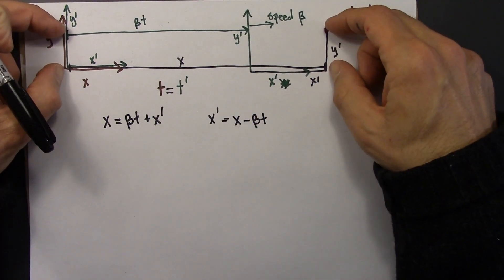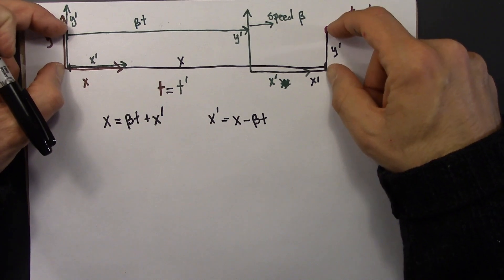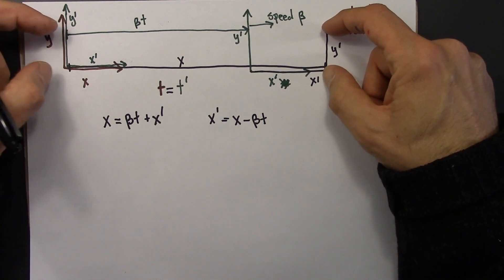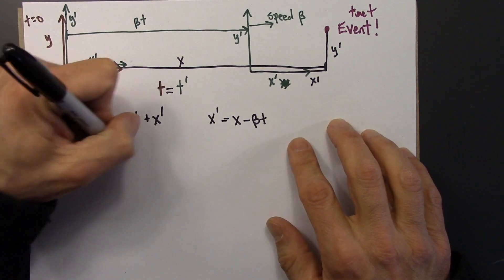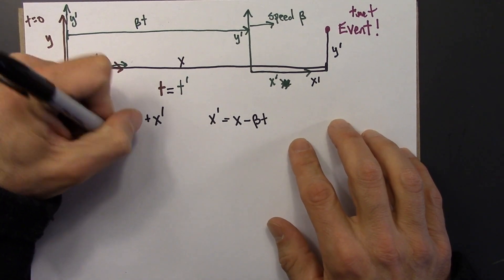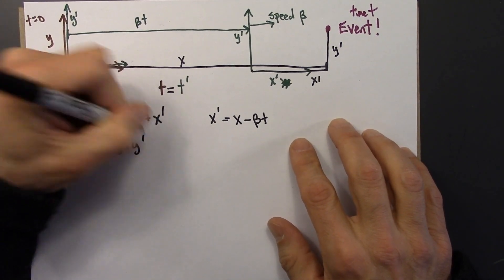And then these two observers, these two reference frames, Ana and Bay, they're going to agree, they're going to measure the same y value. So I could write that y equals y prime.